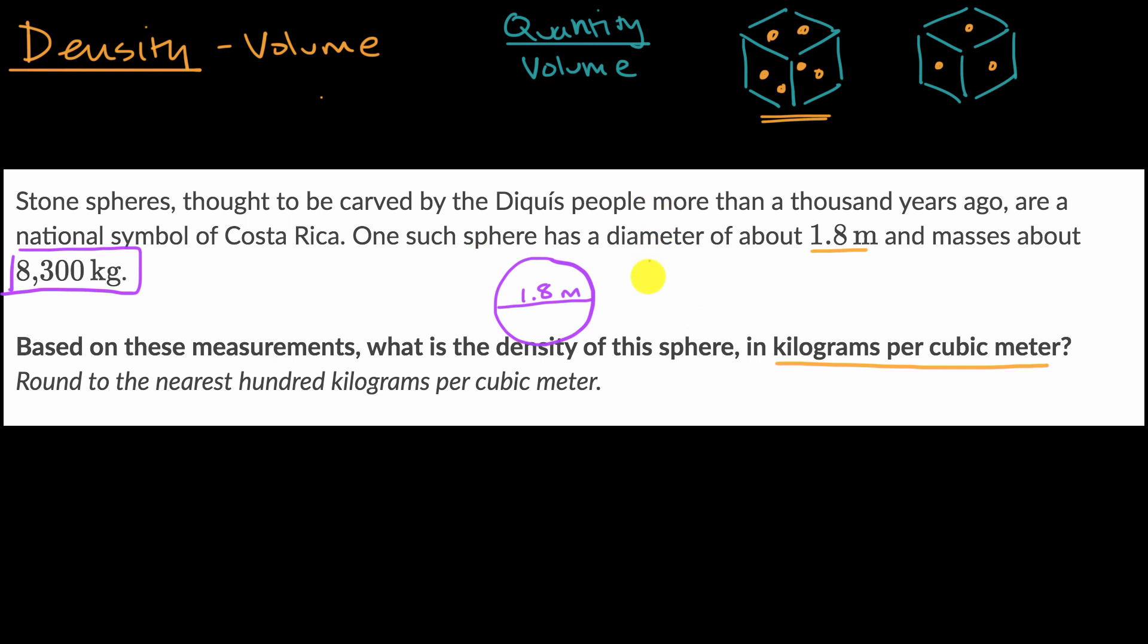Now, you may or may not already know that the volume of a sphere is given by 4/3 π r³. And so the radius here is 0.9 meters. And so that would be the r right over here.